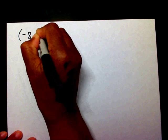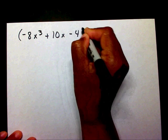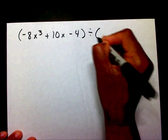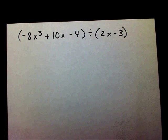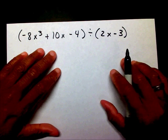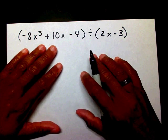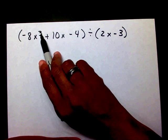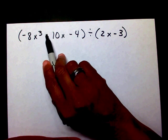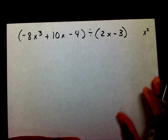Let's say I have negative 8x to the third plus 10x minus 4 divided by 2x minus 3. Now, the polynomial that's being divided — if you notice the exponents — you have x to the third, but you don't have x to the second. So we're missing x to the second.